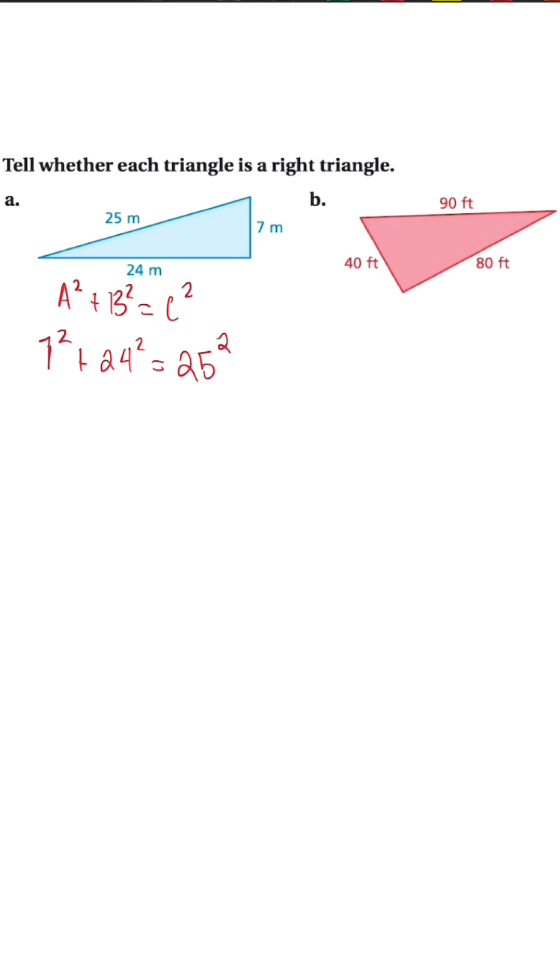Once we set this up, we're going to have 7 squared plus 24 squared is equal to 25 squared. What we're looking for is basically a true statement where the left side equals the right side. Once we simplify, we're going to have 49 plus 576 is equal to 625.